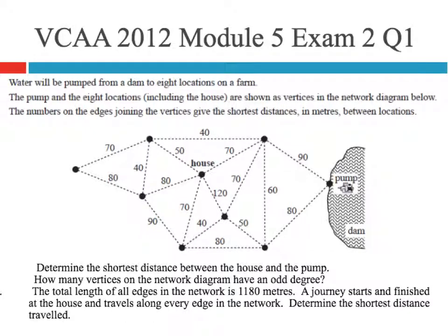Okay, so this video is going to go through the VCAA 2012 exam 2, module 5, question 1. Water will be pumped from a dam to 8 locations on a farm. The pump and the 8 locations, including the house, are shown as vertices in the network diagram below.